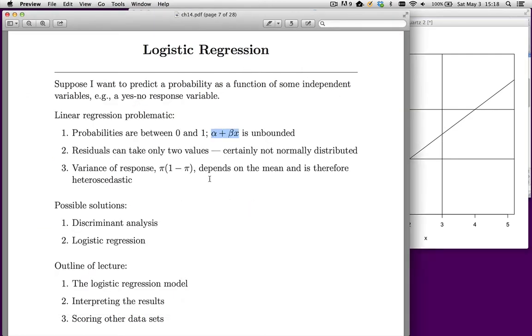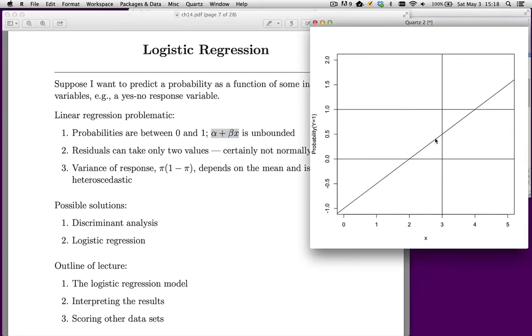Now, a third problem is that the variance of these residuals is going to depend on the mean. Remember that these residuals are like coin flips. So this is heads, that's tails. You have two possible outcomes, heads or tails.